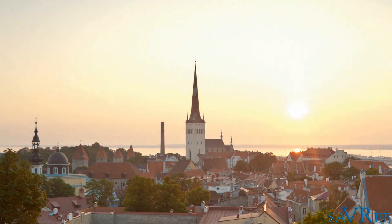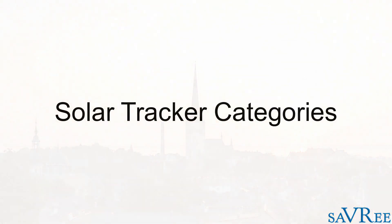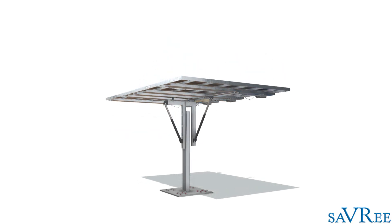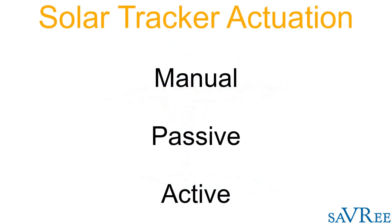So let's now have a look at how we could categorize our solar tracker. The first means of categorizing a solar tracker is by its means of actuation. Solar trackers can be either manually, passively, or actively controlled.